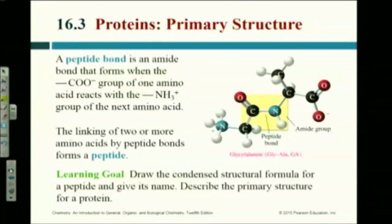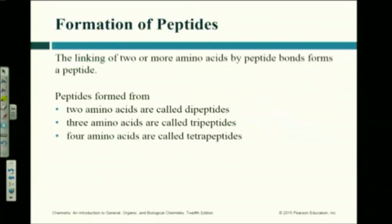Now let's talk about the structures of proteins. There are four levels of structure to a protein. The first level is called the primary structure. That is when you link two amino acids together by a peptide bond — a covalent bond linking two amino acids together. When you join enough of them together, you make a protein. The sequence in which they occur is the primary structure of a protein.